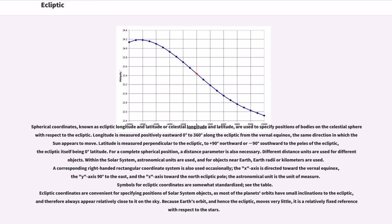Spherical coordinates, known as ecliptic longitude and latitude or celestial longitude and latitude, are used to specify positions of bodies on the celestial sphere with respect to the ecliptic. Longitude is measured positively eastward 0 degrees to 360 degrees along the ecliptic from the vernal equinox, the same direction in which the Sun appears to move. Latitude is measured perpendicular to the ecliptic, to plus 90 degrees northward or minus 90 degrees southward to the poles of the ecliptic, the ecliptic itself being zero degrees latitude. For a complete spherical position, a distance parameter is also necessary. Different distance units are used for different objects. Within the solar system, astronomical units are used, and for objects near Earth, Earth radii or kilometers are used.